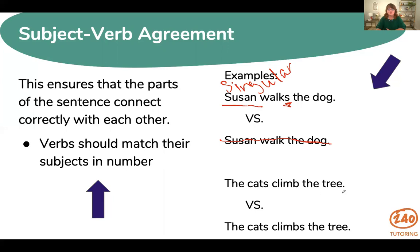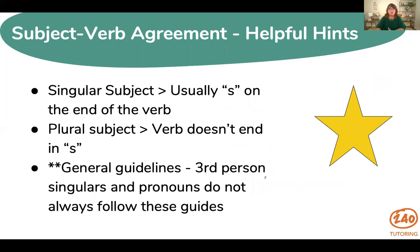Let's look at another example: 'The cats climb the tree' versus 'The cats climbs the tree.' Our subject this time is plural, and the verb does not have an s on the end. So when the subject is plural, most of the time the verb will have no s on the end. A helpful hint: singular subject has an s in the word singular — there's usually an s on the verb. Plural subject has no s in the word plural — so there's no s on the verb. These are general guidelines, not absolute rules.